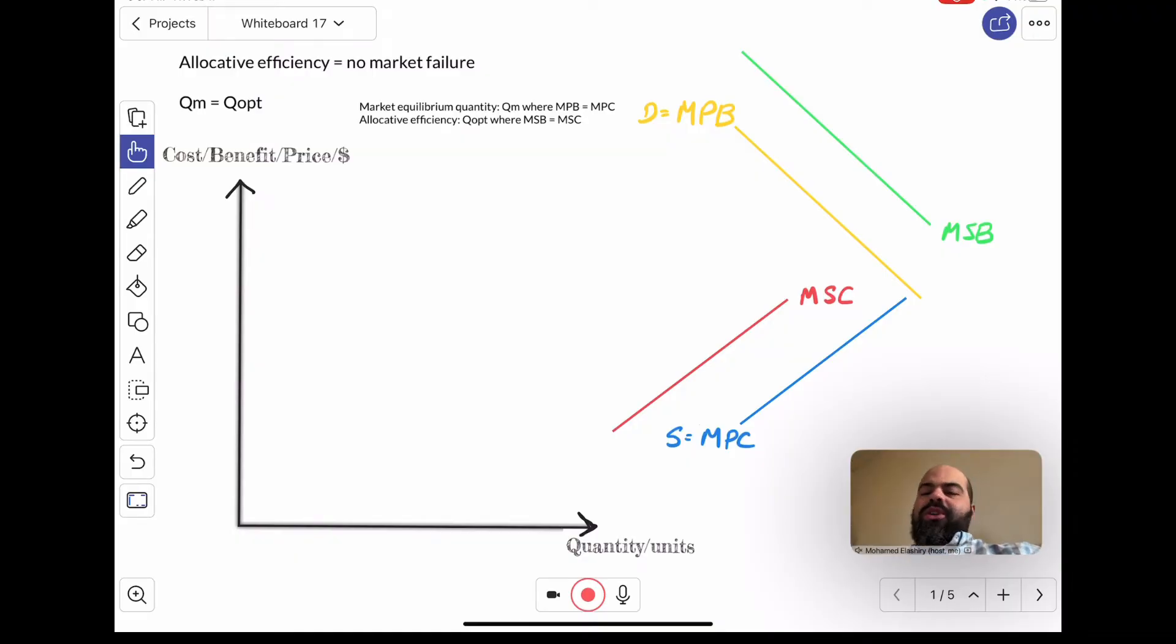Hello everyone. A lot of my students really struggle to wrap their heads around market failure, so the first video of this series I'm going to talk about the situation where there is no market failure, where the market actually achieves allocative efficiency.